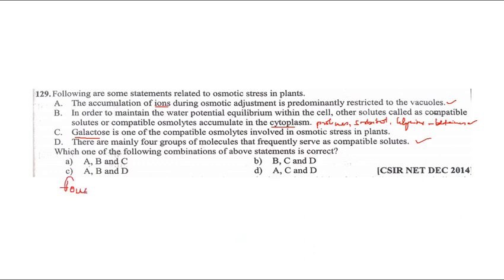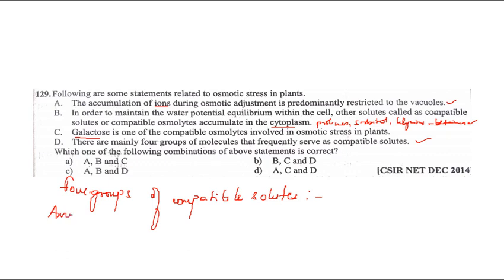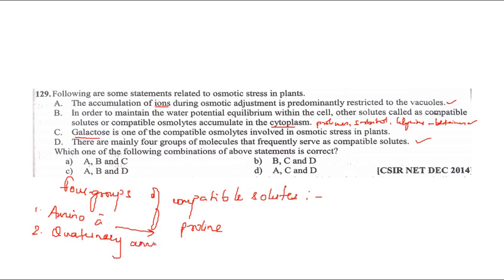The four groups of compatible solutes include: first, amino acids - example: proline. Second, quaternary ammonium compounds - which includes glycine betaine.